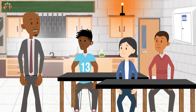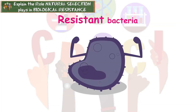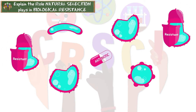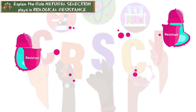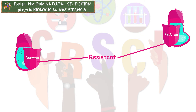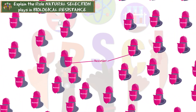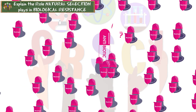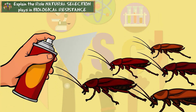Let's say we have a bacterium with a random mutation that gave it an advantage that helps it survive the effects of antibiotics. This is called resistance. And the ones that are not resistant die off, but that leaves the resistant bacteria around to just survive and reproduce. And eventually, across generations, you end up with just bacteria that can resist certain antibiotics. And the same thing can happen with pesticides and bugs.